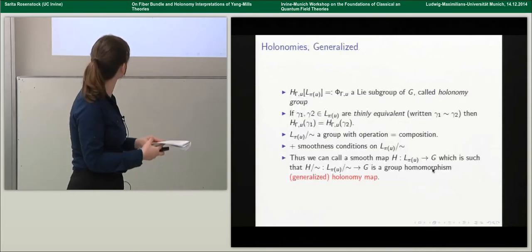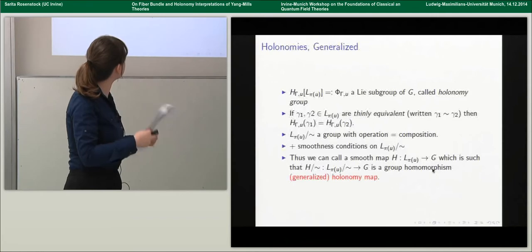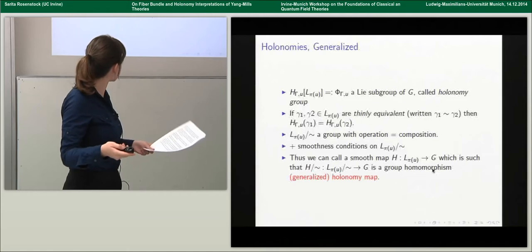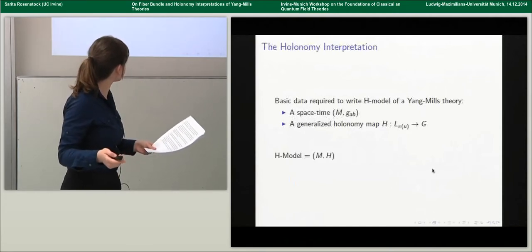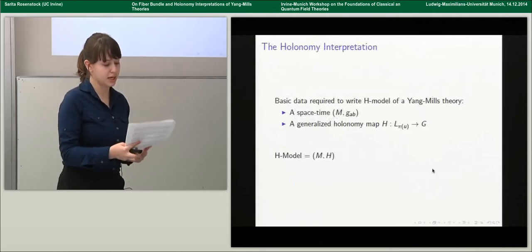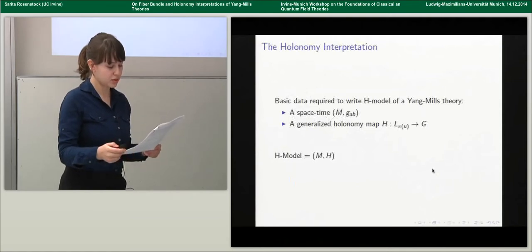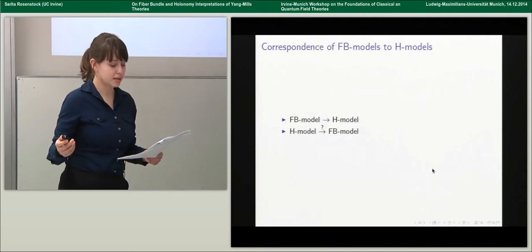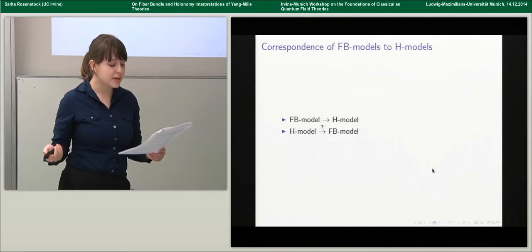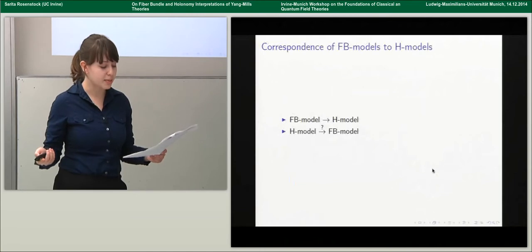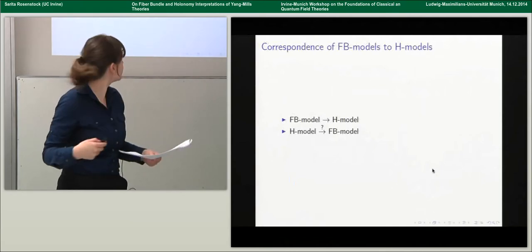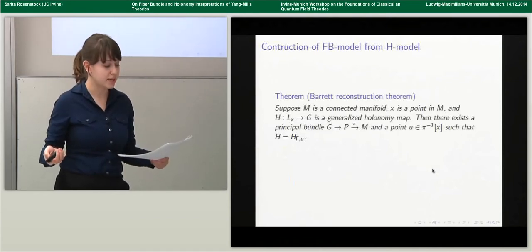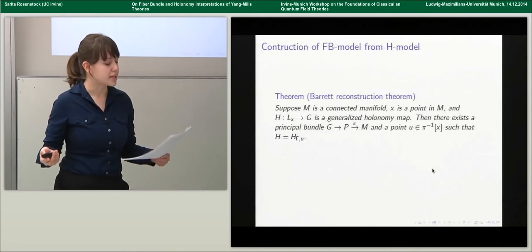This allows us to define a generalized holonomy map as a smooth map from the set of loops at a base point to G, such that when you mod out by thin equivalence you get a group homomorphism. Holonomy models are then ordered pairs consisting of a manifold and such a holonomy map. We can now ask whether there's a natural correspondence between fiber bundle models and holonomy models. In the context of an underlying fiber bundle model and a base point, we can get a corresponding holonomy map, but it's not obvious that you can always find a fiber bundle model associated to a given holonomy model. It turns out that the way we define generalized holonomy maps does let us construct such a fiber bundle model, as shown by Jonathan Barrett in 1991.